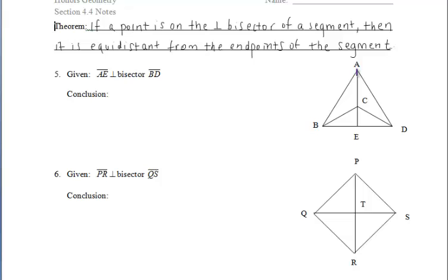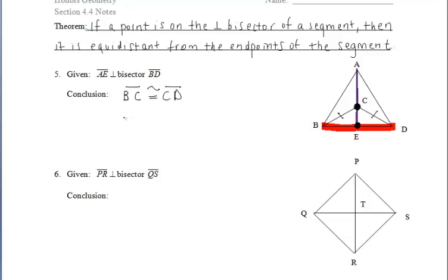We have our perpendicular bisector AE, highlighted in purple, and segment BD at the bottom in red. AE is the perpendicular bisector of BD, which means any point that lies on that purple segment is equidistant from the endpoints of the red segment. Since C lies on the perpendicular bisector, C is equidistant from B and D. E also lies on the perpendicular bisector, so BE is congruent to ED. And A lies on the perpendicular bisector, so segment AB is congruent to segment AD.